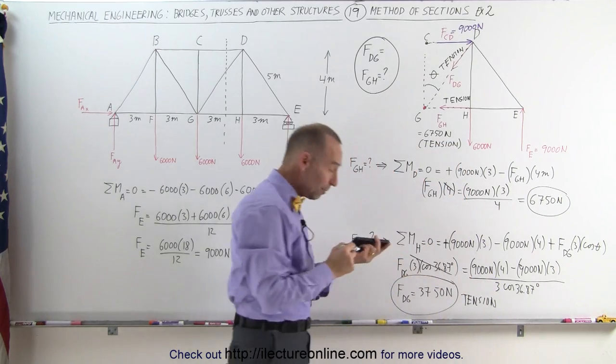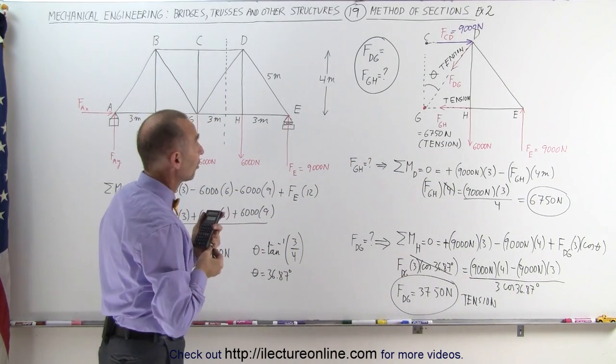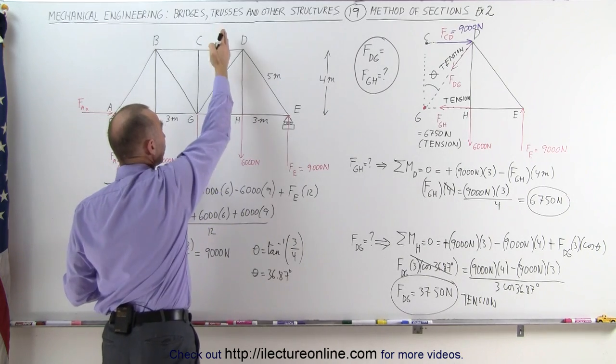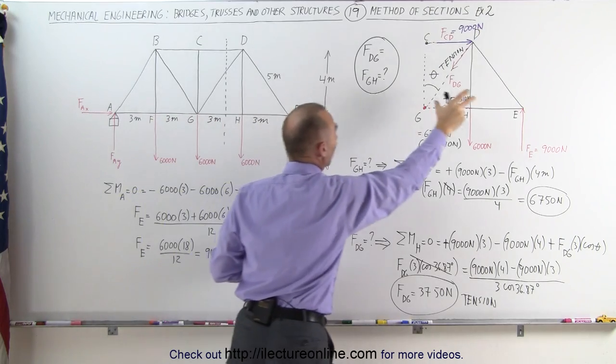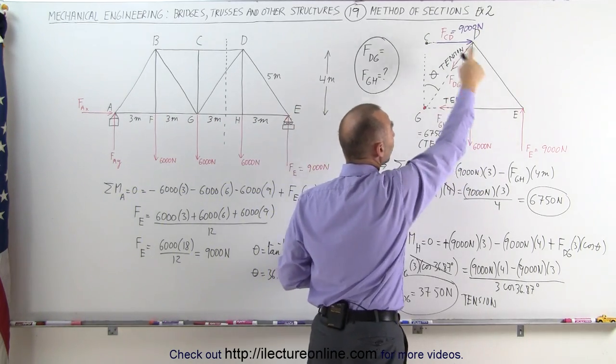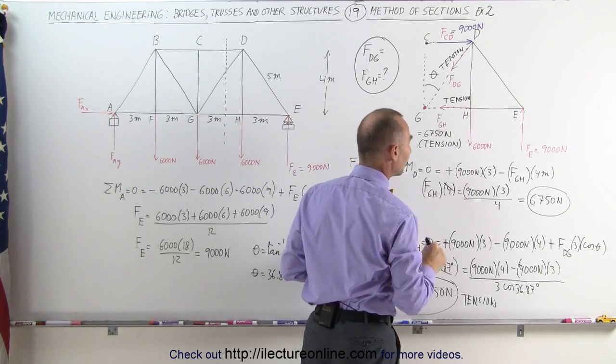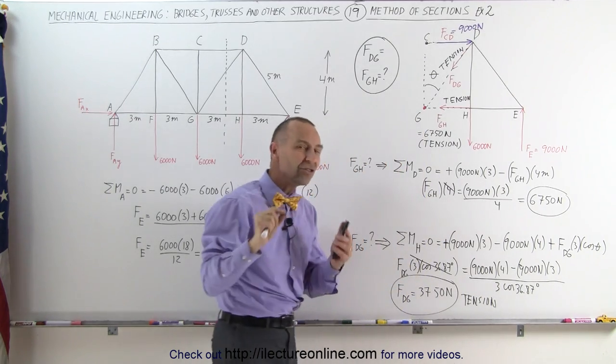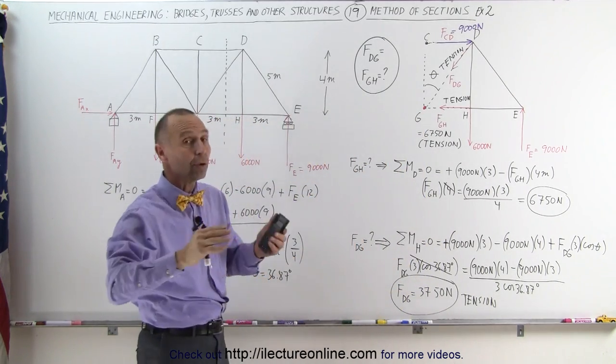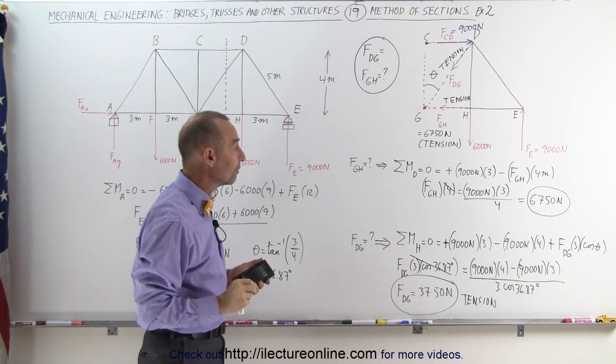And that's how we use the method of sections, where we simply cut the structure, the bridge, where we want to find the force on the members. We take that section, put it out separately. We write down all the forces acting on that section. And then we do the sum of the moments at a particular point, strategically picked, so we can eliminate all other unknowns, and then solve for the one unknown we're looking for.